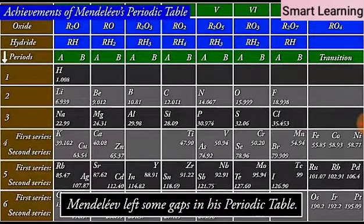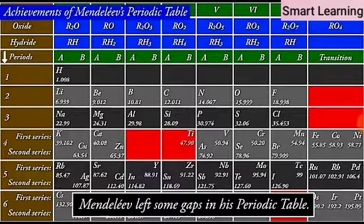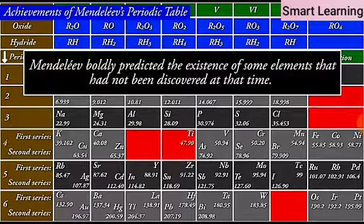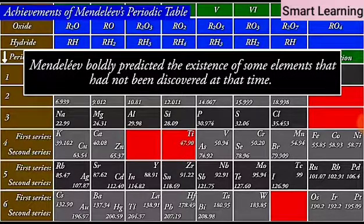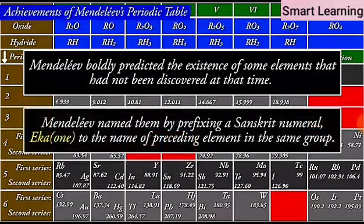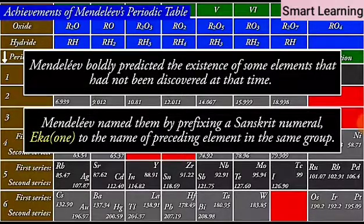Further, Mendeleev left some gaps in his periodic table. Instead of looking upon these gaps as defects, Mendeleev boldly predicted the existence of some elements that had not been discovered at that time. Mendeleev named them by prefixing a Sanskrit numeral, Eka, meaning one, to the name of preceding element in the same group.